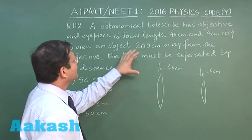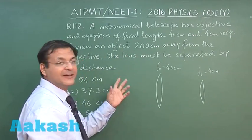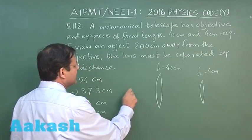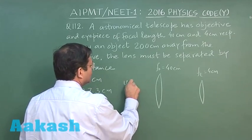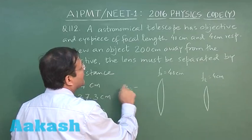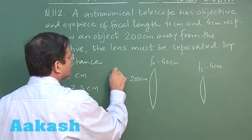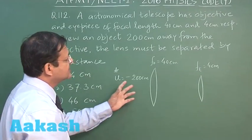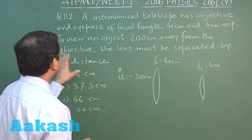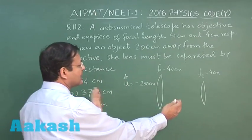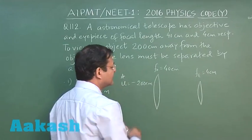Now to view an object 200 centimeter away from the objective, the object is somewhere here, u is equal to minus 200 centimeter. So here is the object. You have to first calculate what is the position of the image. It is asking you the lens must be separated by, you have to find out the separation of them.